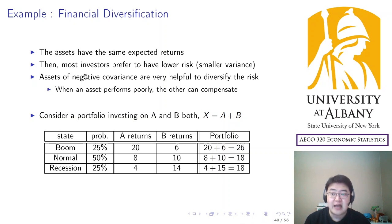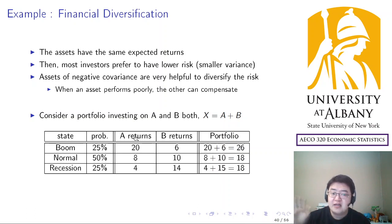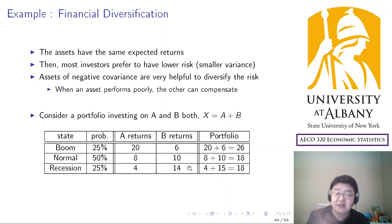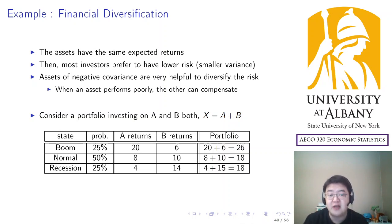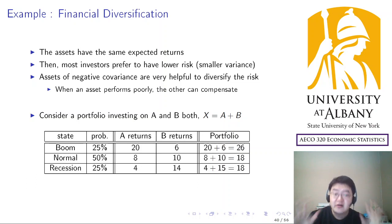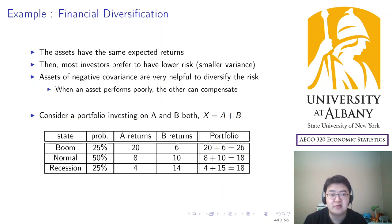As you might guess, negative covariance is very helpful to diversify risk. When A is doing well it can cover B's underperformance, and when A is not doing well, B is doing well — they complement each other. Overall risk can be diversified by allocating investment into two financial assets that have negative covariance. That's the point of risk diversification in our example.